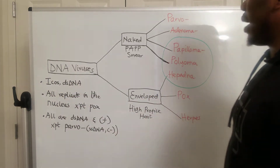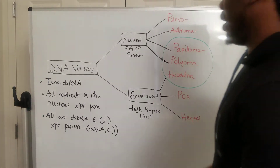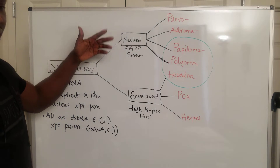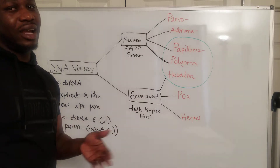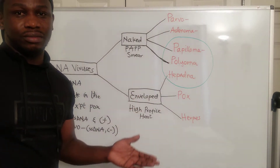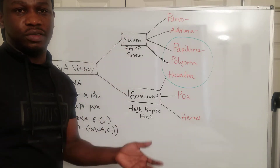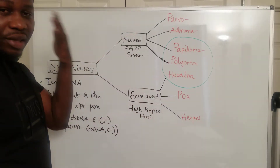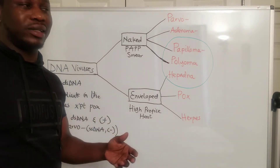When it comes to DNA viruses, there are two classes: naked DNA viruses and enveloped DNA viruses. The difference is straightforward — enveloped viruses have an envelope around them, and naked DNA viruses have no envelope around them.